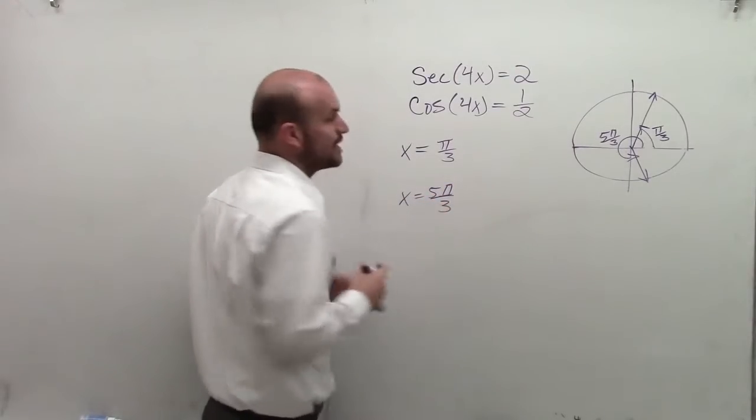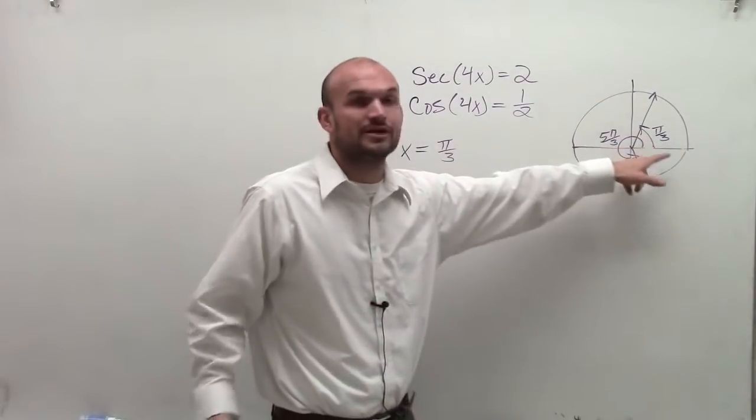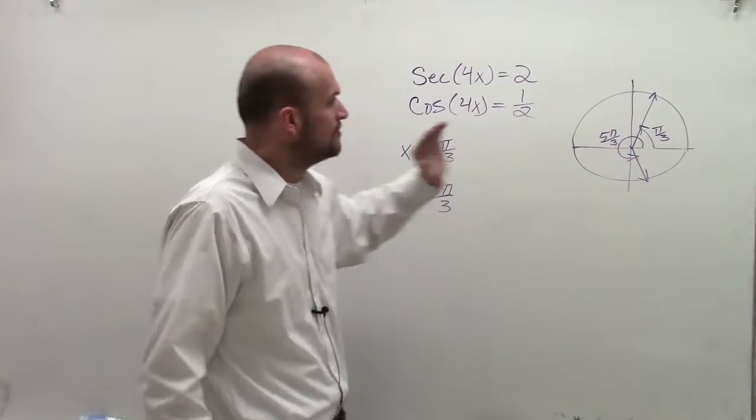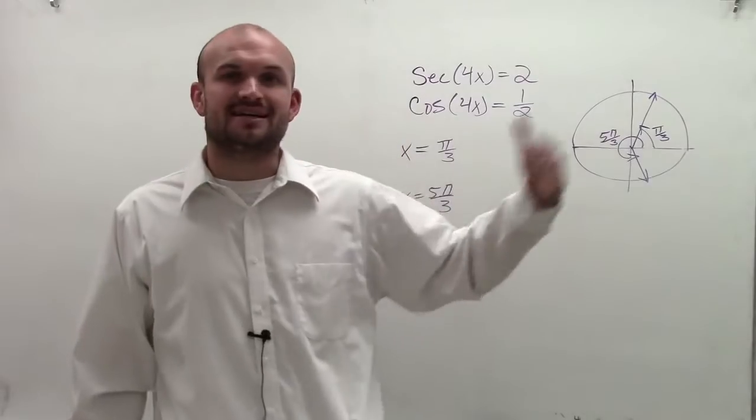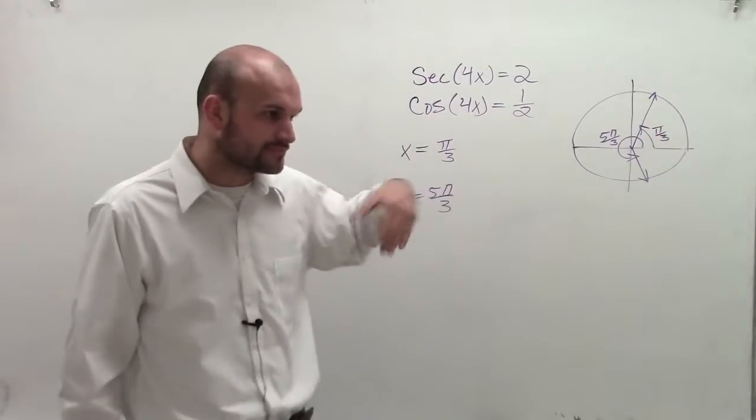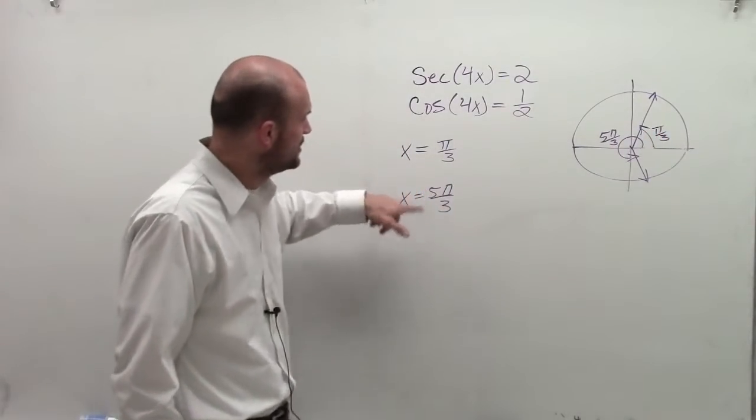Now, I want to find all of the solutions, not just the solutions that are on the interval of 0 to 2 pi. Because remember, the cosine and secant graph continue infinitely in the positive negative direction.